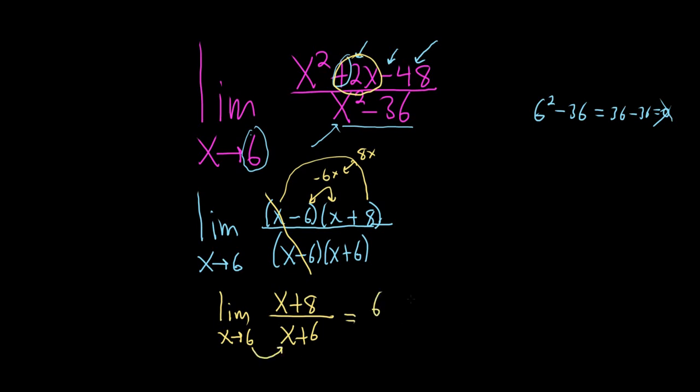So here we have 6 plus 8, so we're not writing the limit sign, over 6 plus 6. This is equal to 14 over 12, which is equal to 7 over 6. And that would be the final answer. That's it.